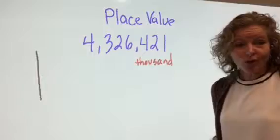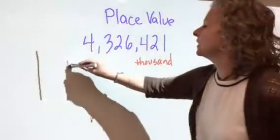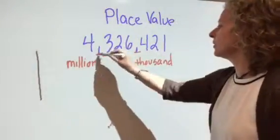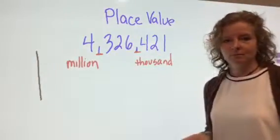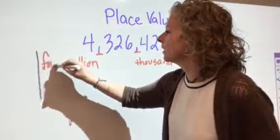The next comma, you know this already. You're gonna read that as what? Million. And now we just look at the chunks in between those words or in between those commas. So what comes before this comma? Can you read that for me? Mm-hmm. Four. Four million. We're done with this now.